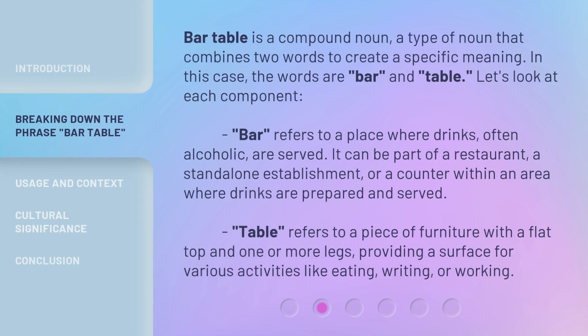'Bar table' is a compound noun, a type of noun that combines two words to create a specific meaning. In this case, the words are 'bar' and 'table.' Let's look at each component.